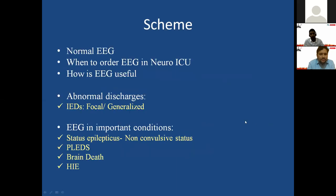The scheme will be: we'll look at normal EEG, when to order EEG in neuro ICU, how EEG is useful, and we'll look at abnormal discharges — how to identify them. Then we'll cover some important conditions: how EEG appears in status epilepticus, non-convulsive status, what PLEDs are, how EEG appears in brain death, and how EEG appears in various encephalopathies as well as hypoxic ischemic encephalopathy.